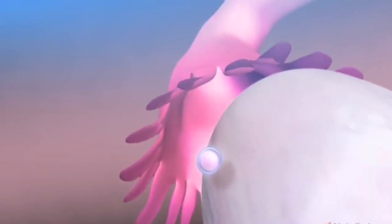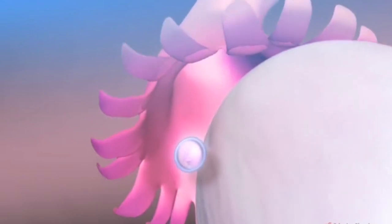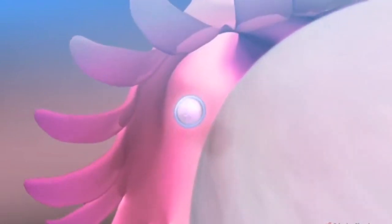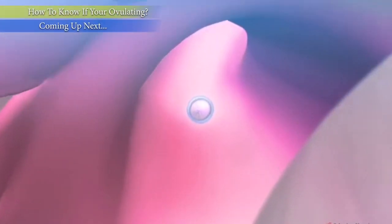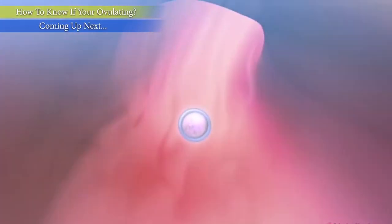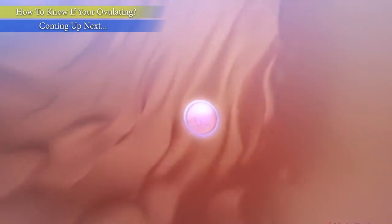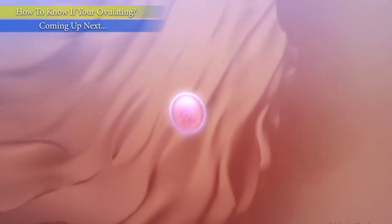Once the egg is released, it has only up to 24 hours to achieve fertilization. If the egg is not fertilized, it disintegrates and periods commence, marking the start of a new menstrual cycle.